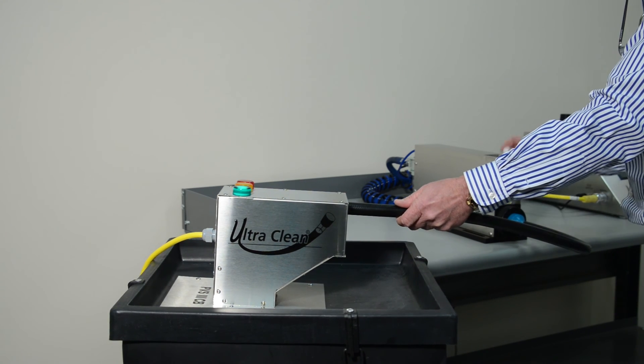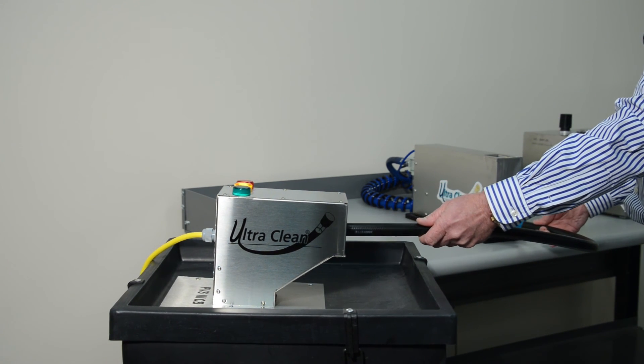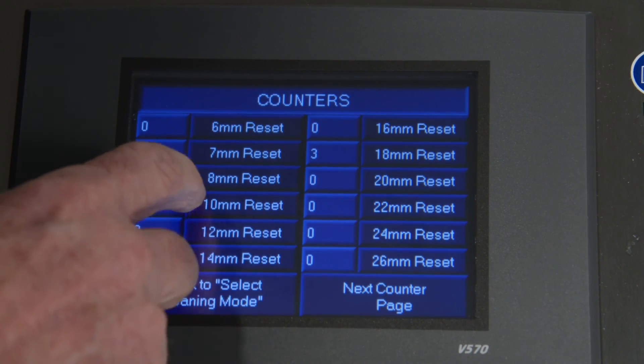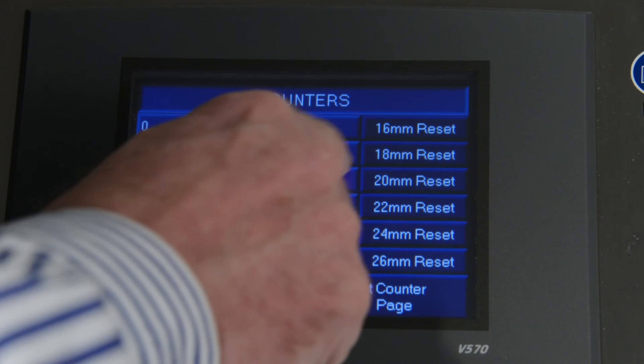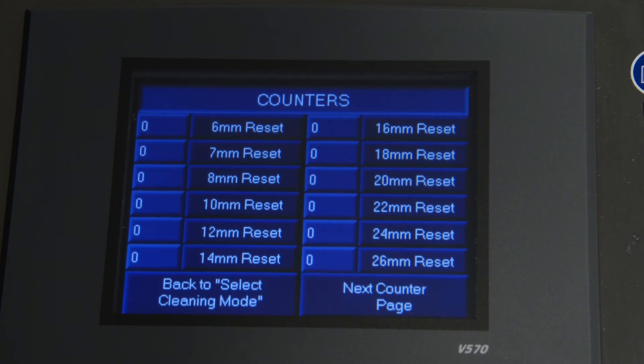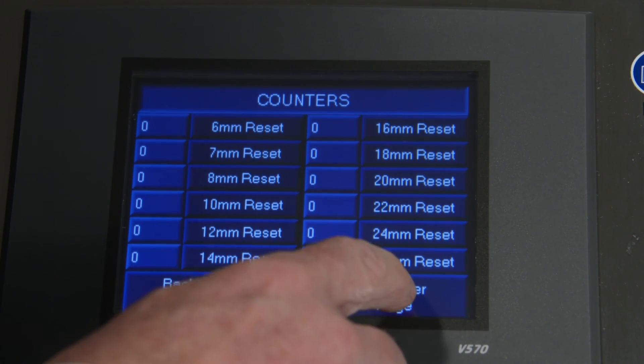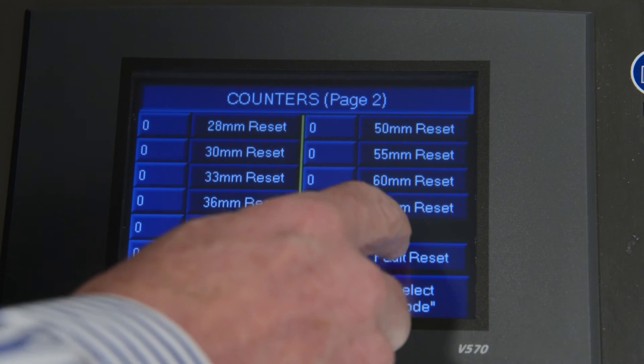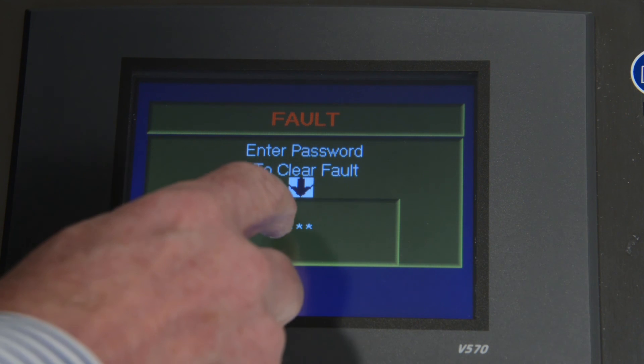You can access all projectile and fault counts by pressing the Counter Information button. The counters can be manually reset by pressing the Reset button for each projectile size. Faults can be reset on the second page by pressing the Fault Reset button and entering the password.